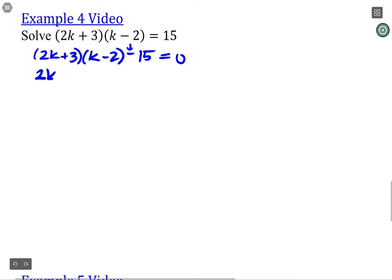When I FOIL that, I get 2k² minus 4k is my outside, plus 3k is my inside, minus 6 is my last. So I end up with 2k², and then when I combine those k's it's actually...